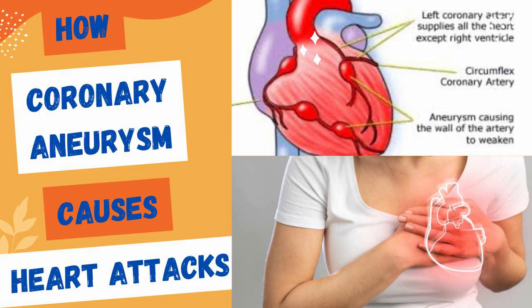1. Coronary Artery Abnormalities. Coronary anomalies refer to variations in the normal anatomy or course of the coronary arteries. These abnormalities can include anomalies in the origin, course, or branching pattern of the coronary arteries. In some cases, the coronary arteries may have an abnormal connection with other blood vessels, leading to altered blood flow dynamics. These structural abnormalities can disrupt the blood supply to the heart muscle and increase the risk of myocardial infarction.